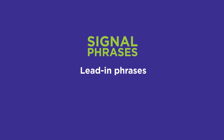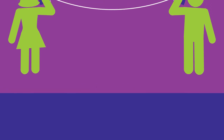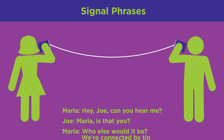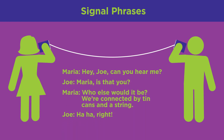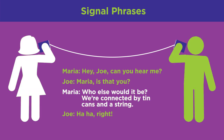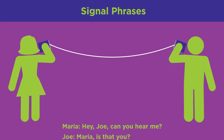Sometimes signal phrases are called lead-in phrases or voice markers. Signal phrases communicate to whom an idea belongs. Similarly, playwrights use a method like this to indicate who is saying what: 'Hey Joe, can you hear me?' 'Maria, is that you?' 'Who else would it be? We're connected by tin cans and a string, right?'